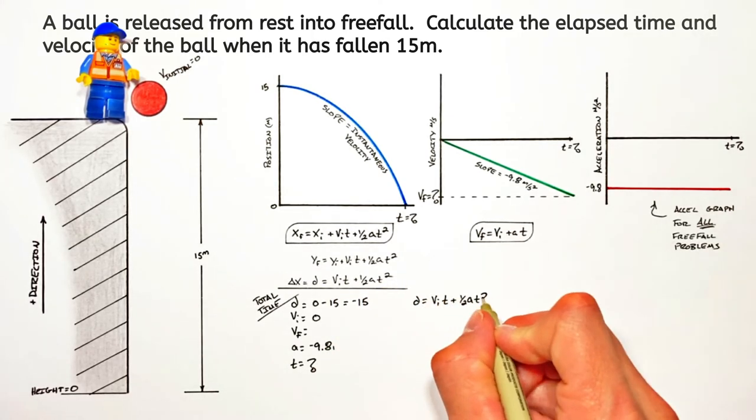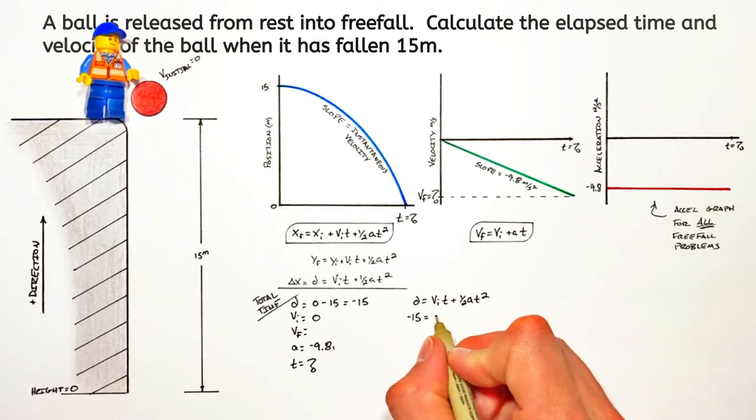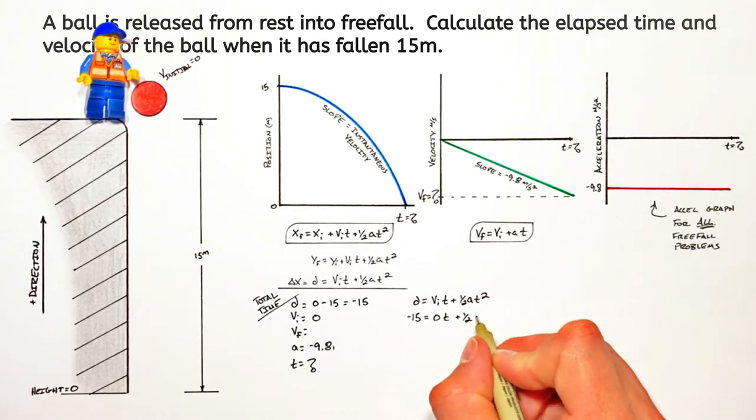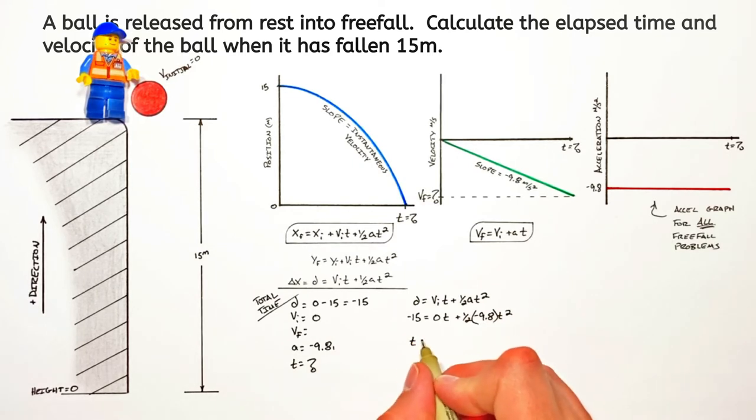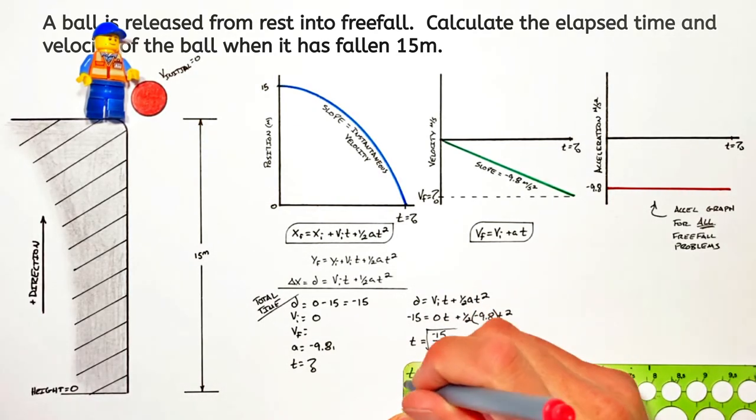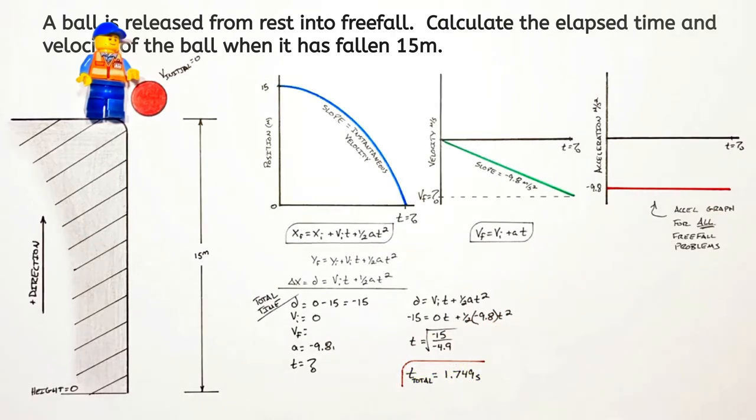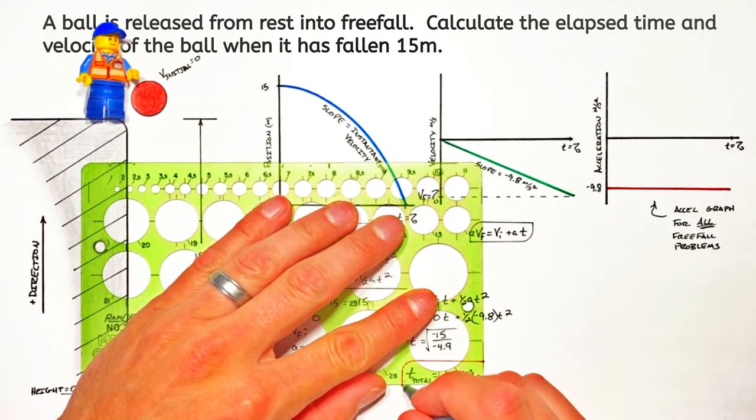So I'll use our displacement equation. So negative 15 is equal to 0t plus 1 half at squared. So rearranging this equation and doing a little bit of algebra, we get the total time the ball is in free fall is 1.749 seconds. And kids, I just don't care about sig figs, but you take it as far as you want.